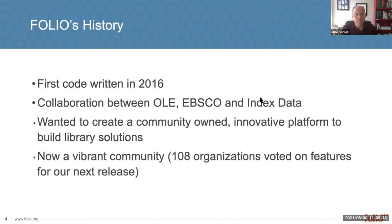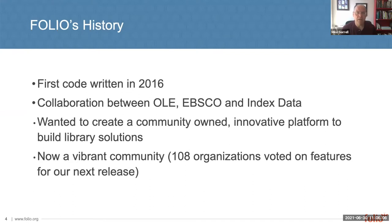A little history around Folio: discussions started in 2015, with first code written in 2016. It started as a collaboration between Olay, EBSCO, and Index Data — all three organizations coming into the conversation from their own needs and perspectives but with common interests and unified goals. We collaborated to start down this path of creating a community-owned innovative platform. It was really important for us that it was open source, and also critical that there was a sense of community ownership and buy-in, creating things that didn't exist before, shared across all participants.